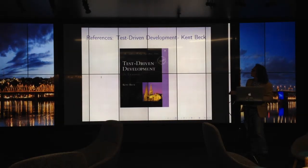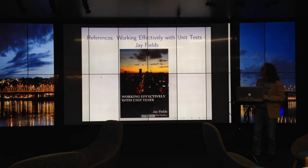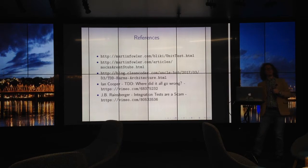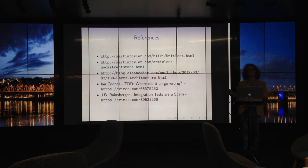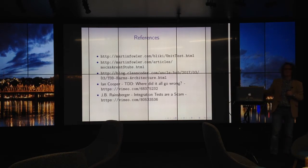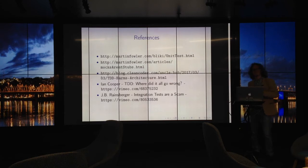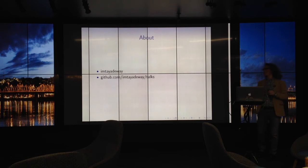A couple of references. This is the Kent Beck book I've referenced in this talk. Jay Fields' book was really good too — it would break your foot if you dropped it, and it has all the terms in it. If you want to see two talks that put forward strong arguments for the mockist and classicist approaches respectively, I really recommend these two: Ian Cooper's 'TDD Where Did It All Go Wrong' for the classicist approach, and JB Rainsberger's 'Integration Tests Are a Scam' for the mockist approach. They're both really good talks, even though they seem to directly contradict each other. I'm on Twitter and GitHub, and here's the location of my slides.